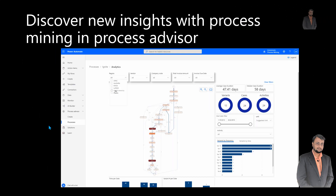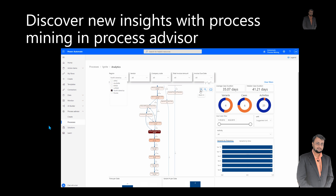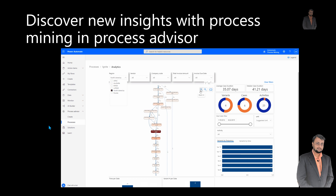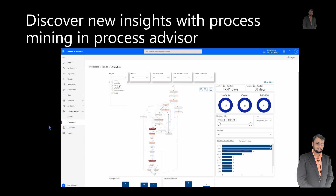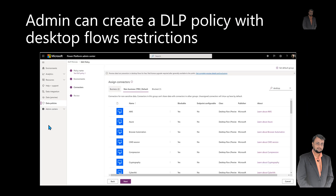The seventh important announcement is around discovering new insights with Process Mining in Process Advisor. With the preview of Process Mining in Process Advisor, you can leverage your business data to produce analytics and detailed process maps, gleaning new insights into ways to optimize business processes. The eighth important announcement is around admin capability to define DLP policies for desktop flows with restrictions. As an admin, you can now create your own DLP policies to govern the use of desktop flows on your devices.